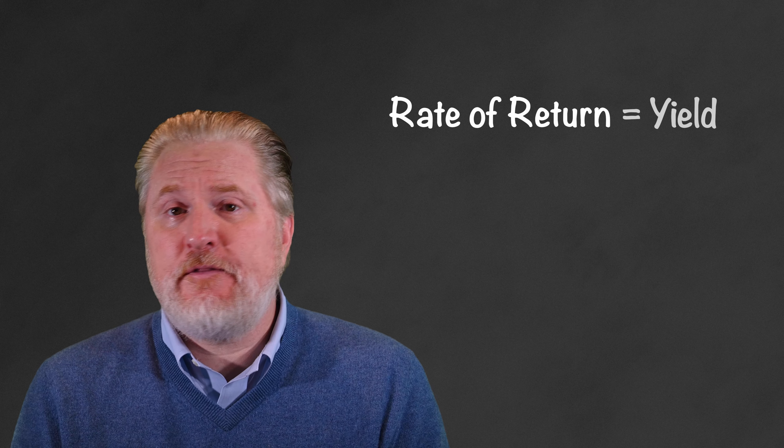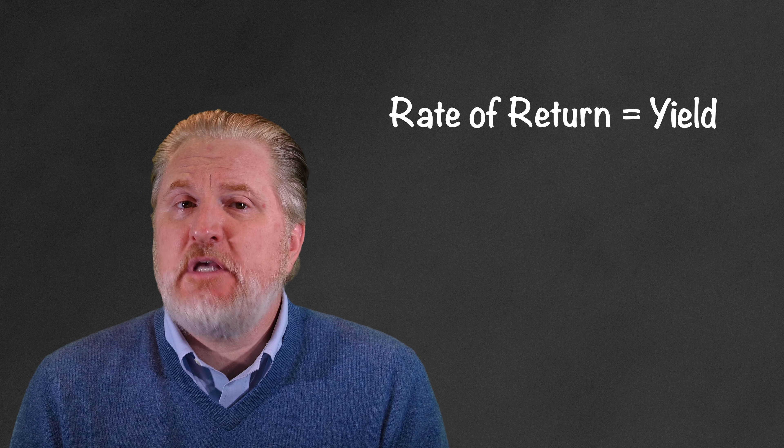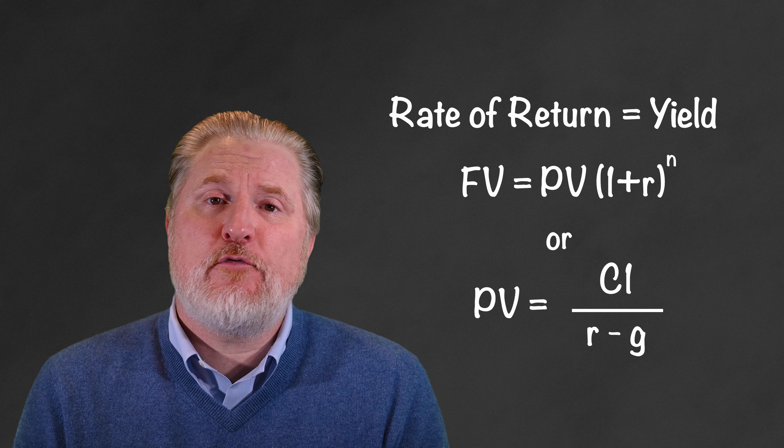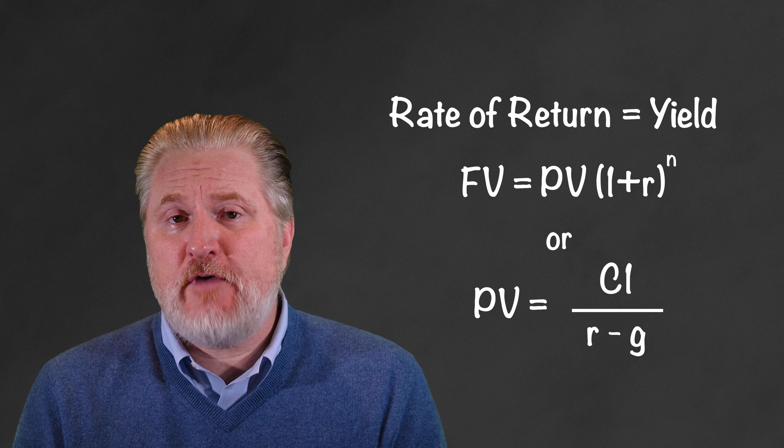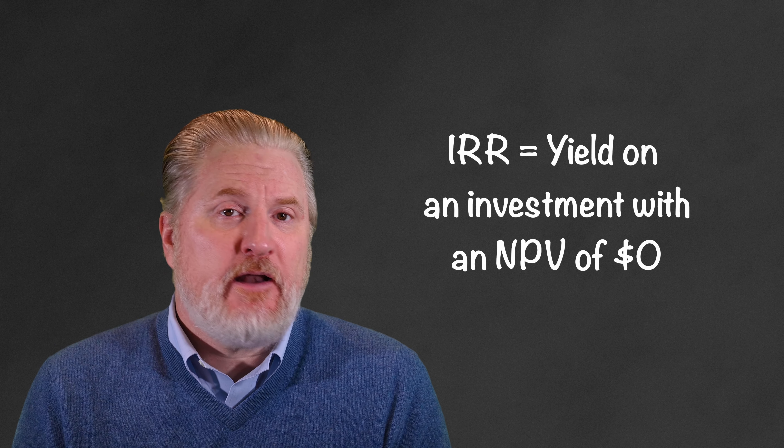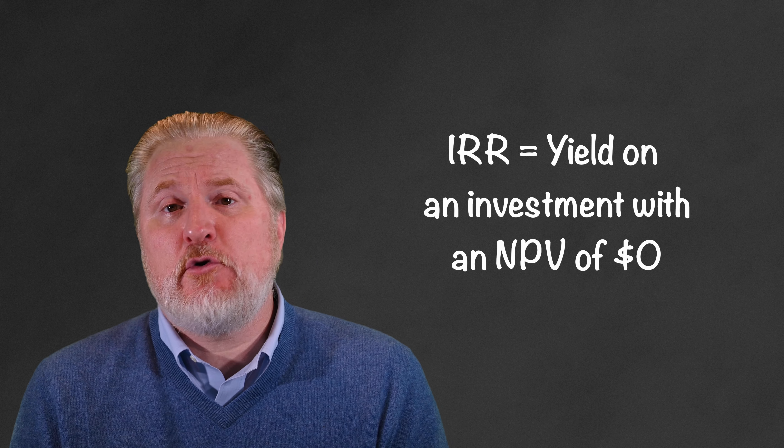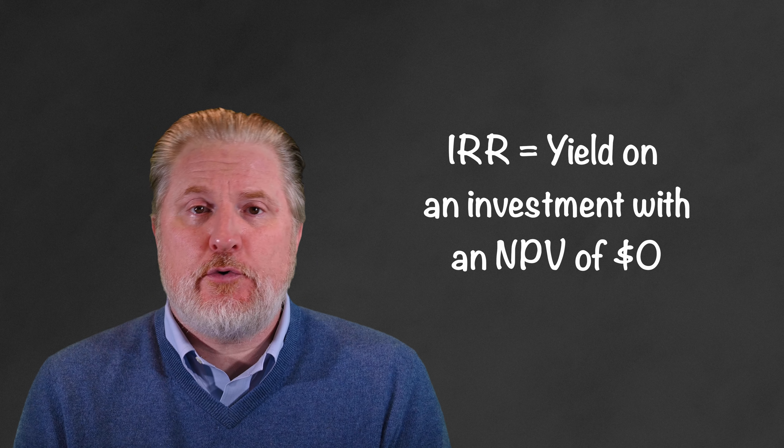But sometimes you won't know the discount rate. Sometimes you have to calculate the rate of return or the yield on the investment. For this, we use the same set of formulas. We just solve for I over Y or R instead of the present value or the future value. The rate you earn on an investment at an NPV of zero is called the internal rate of return or IRR for short.